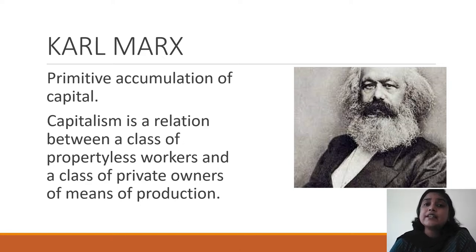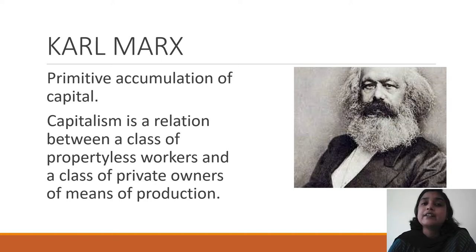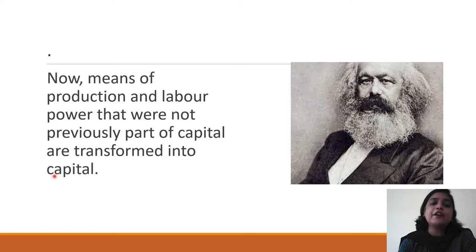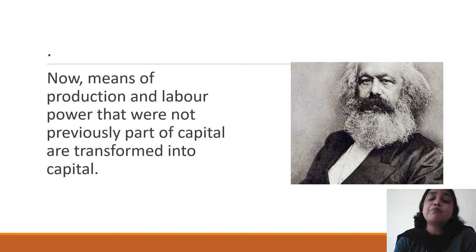The separation of activities created markets. The social relations of production were completely reorganized — previously production was for direct use, but now production is for sale in the market so that profit comes back to the capitalist class. This is what he calls the primitive accumulation of capital, because the means of production and labor power that were not previously part of capital are transformed into capital.